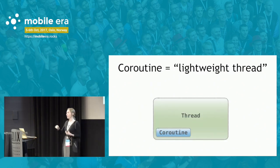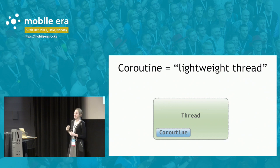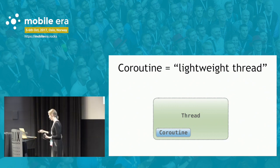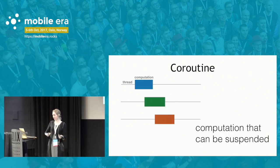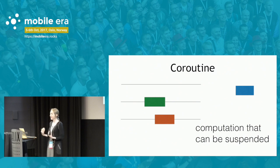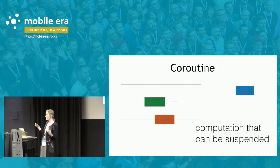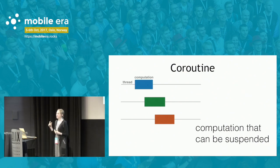Now let's discuss the difference between coroutines and threads, and why if we already have threads we need one more concept. The next way to think about a coroutine is that a coroutine is a computation that can be suspended. During the rest of this talk, threads will be illustrated as a line and computations as blocks on that line. When we say a coroutine is a computation that can be suspended, we can somehow take that computation running on a thread and put it away somewhere.